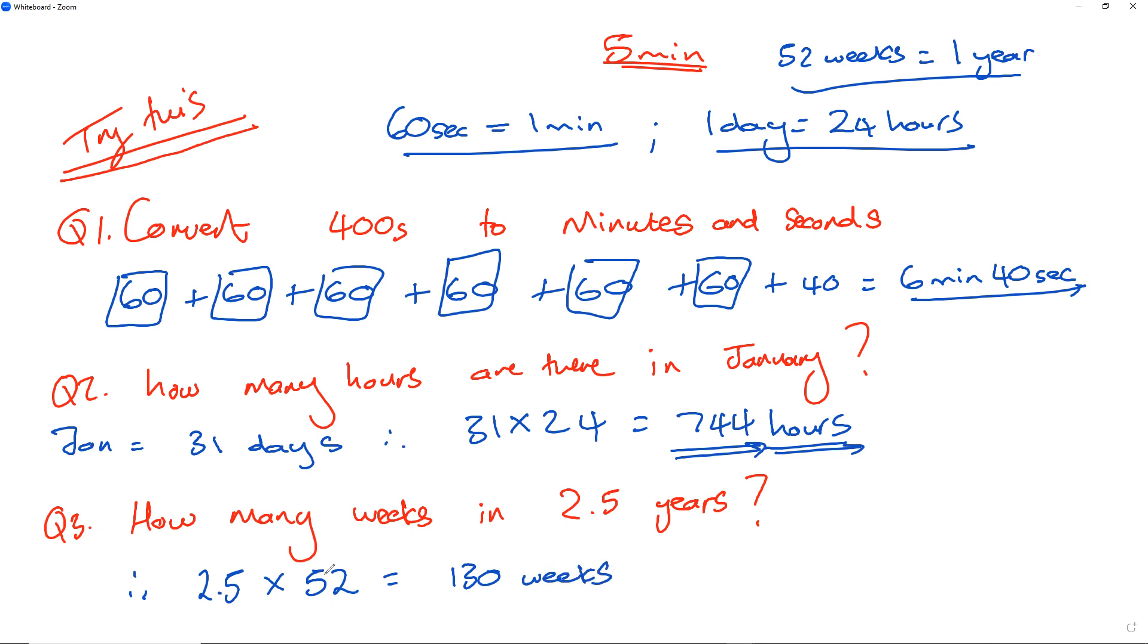If it's 52 weeks in one year, 1 times 2.5 is 2.5. So 52 times 2.5 will be 130 weeks in total.